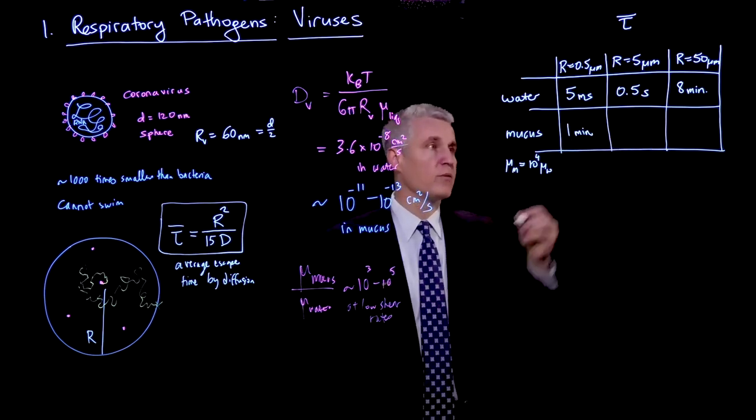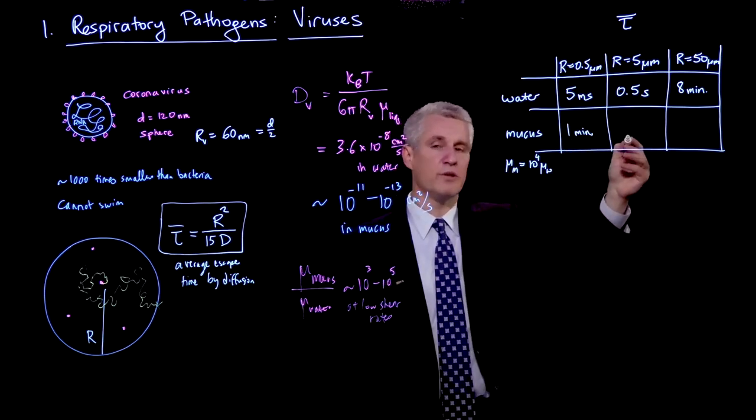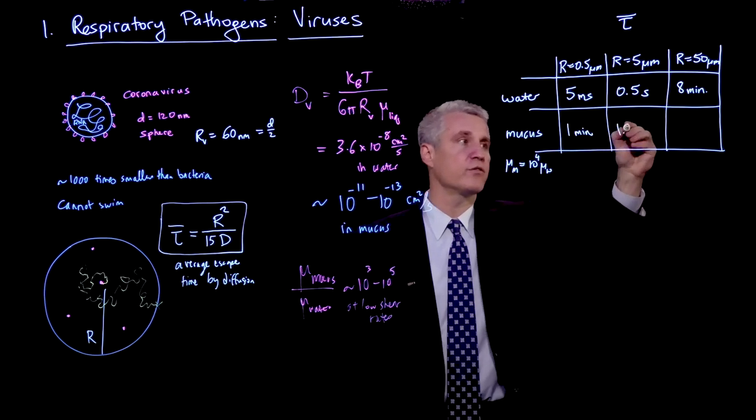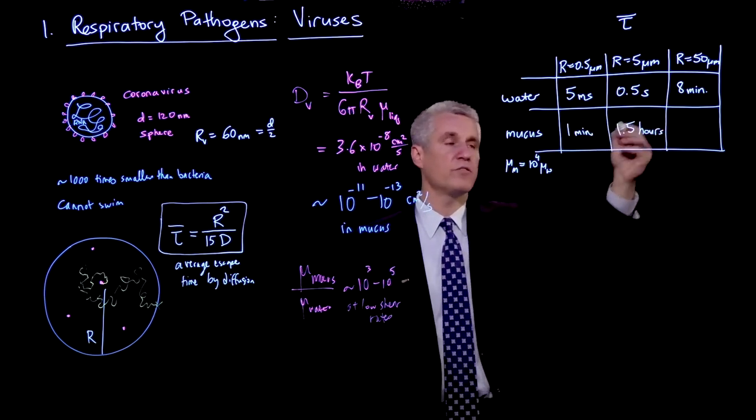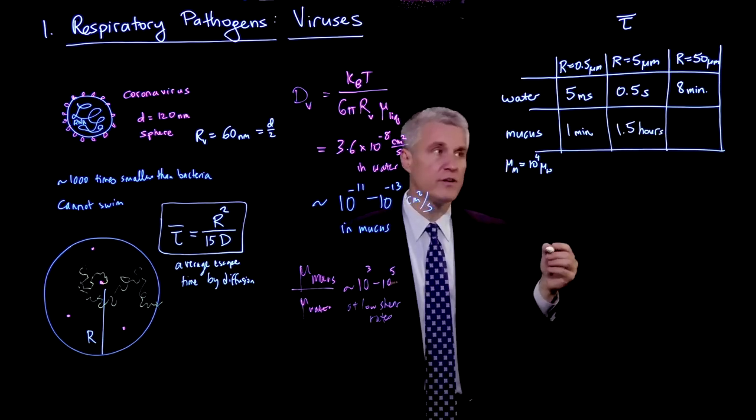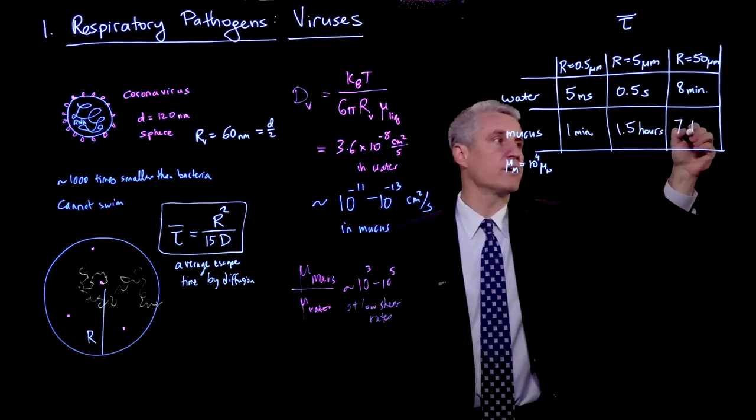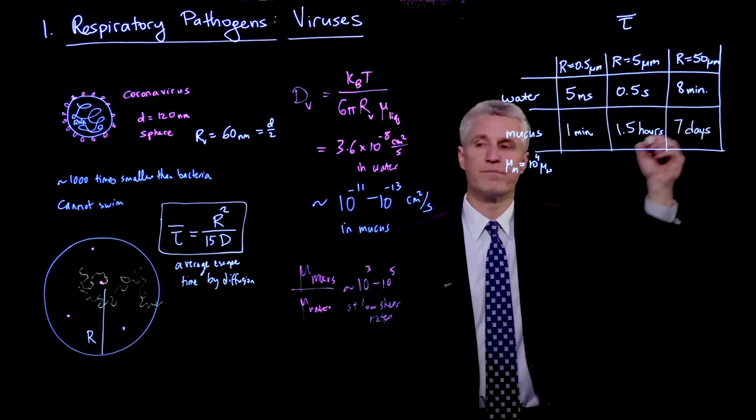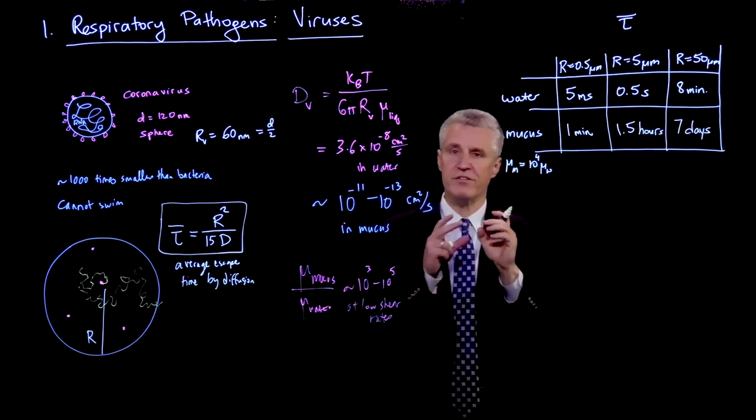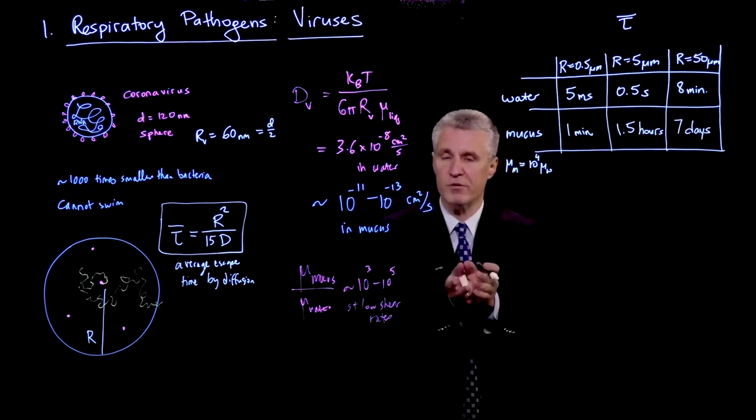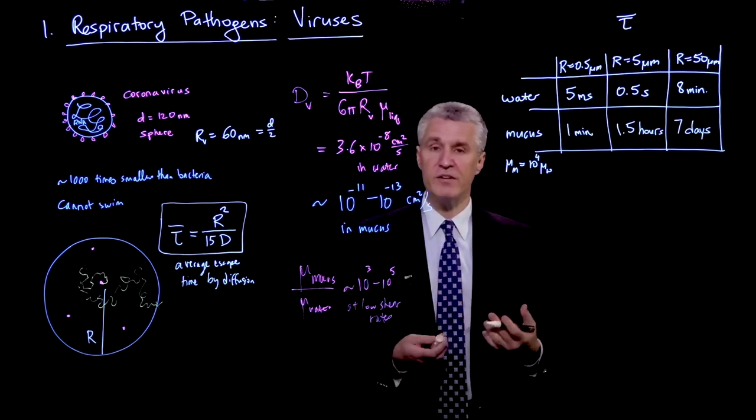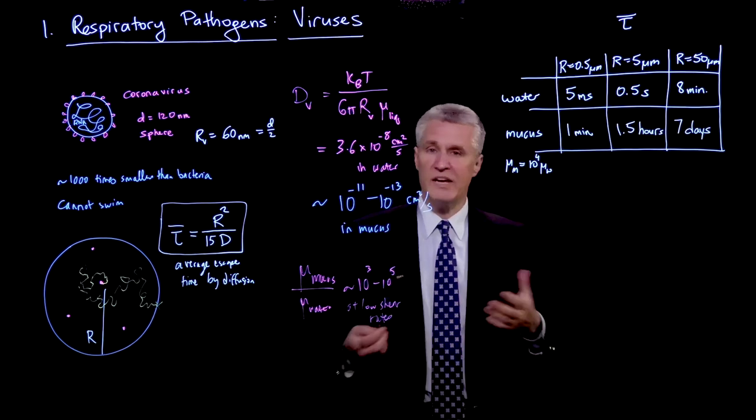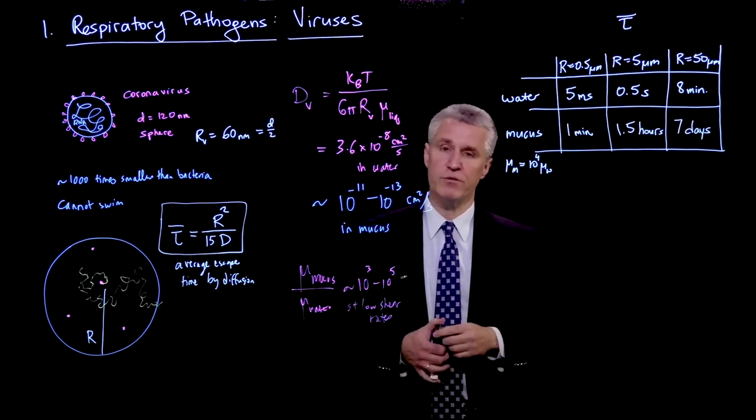Now, if we look at a little bit bigger droplets, this 1 minute, we multiply by 100. It's 100 minutes, which is on the order of 1.5 hours. And what if we keep going another factor of 100? That turns into around 7 days. So if the virion is contained in one of the larger droplets that comes from coughing or sneezing, it could take it hours to days to escape from that droplet and have any chance of infecting a host cell.